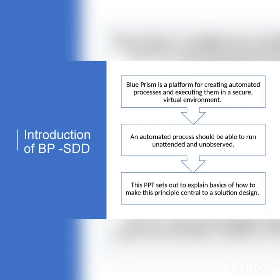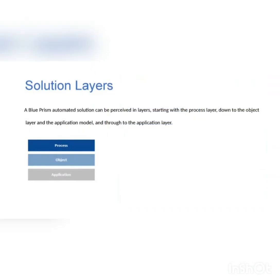When we talk about solution types, the first type is complete automation — also called full automation or entire automation. The second type is partial automation, which means some inputs have to come from a manual process, and only part of the workflow is automated.